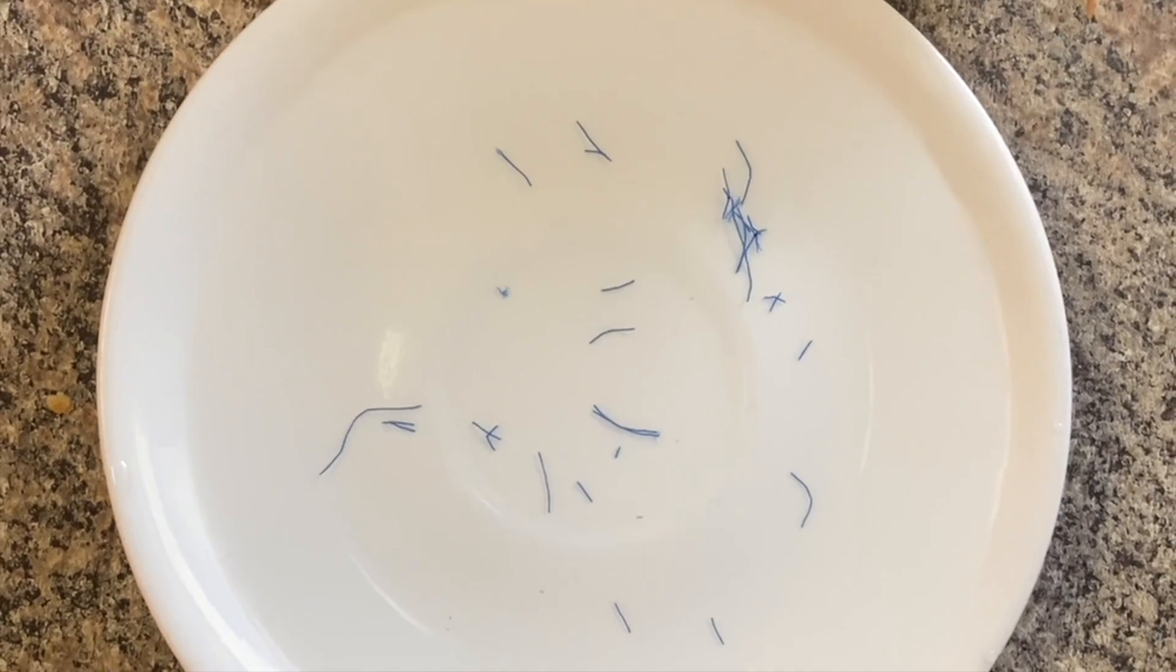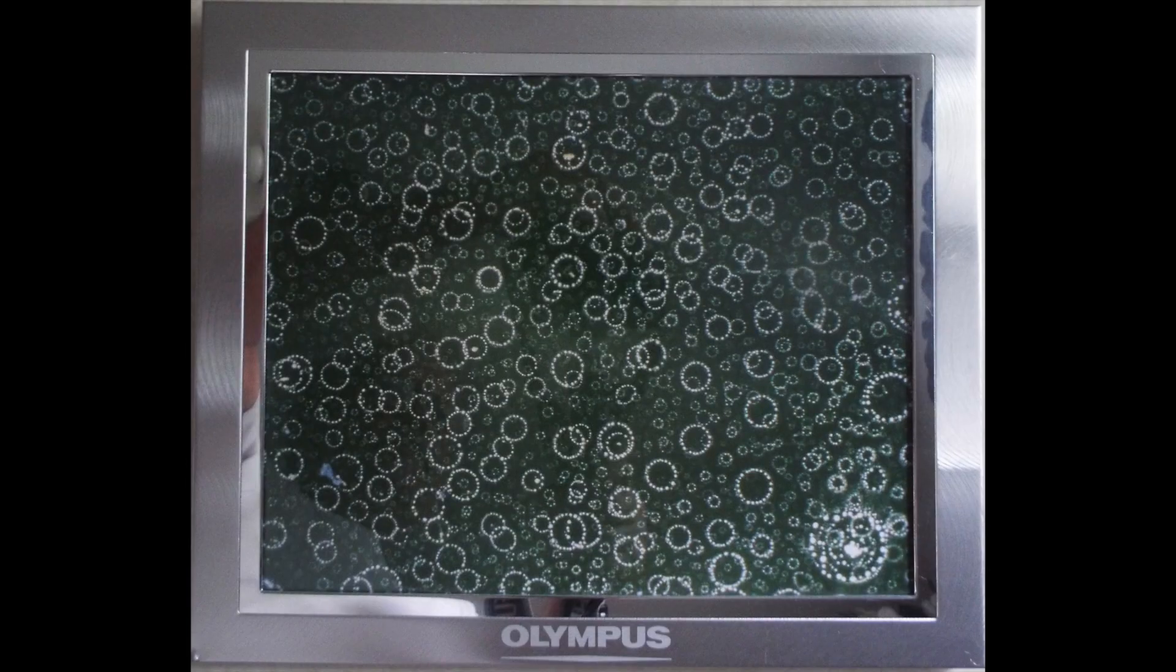Mainstream science says each chromosome contains but a single continuous linear strand of DNA. If so, how can such a strand give rise to the massive and complex set of circles seen in this photomicrograph?